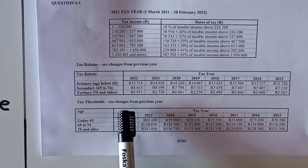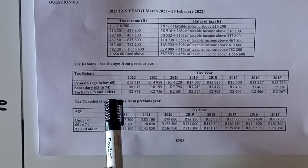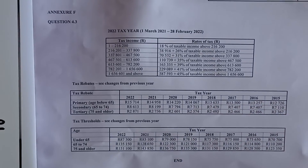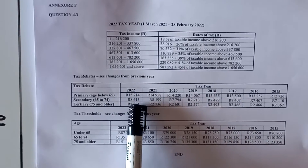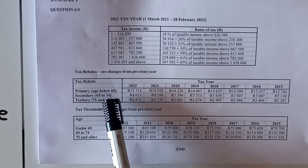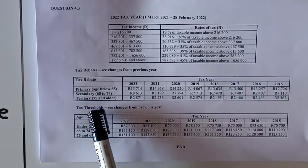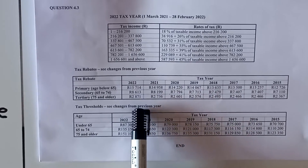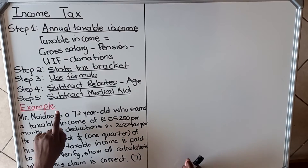Step four: subtract rebates. The rebates depend on age. There is a primary rebate — the rebate is money that SARS will give back to you depending on your age. If someone is below 65, you subtract the primary rebate only. If they are 65 to 74, you subtract both primary and secondary. If they are 75 and older, they fall in the tertiary category and you subtract all three: 15,740, 8,613, and 2,871.